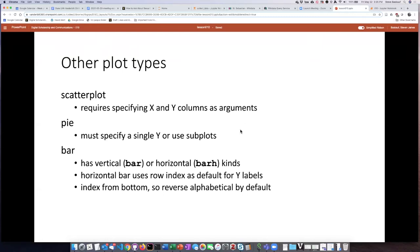For pie charts, since each pie chart really has to be made from a single data series, it does not make sense to think of plotting multiple columns on the same pie chart. So if we want to make a pie chart, we either have to specify a single Y value or we have to tell it to plot each one of the columns as a separate subplot.